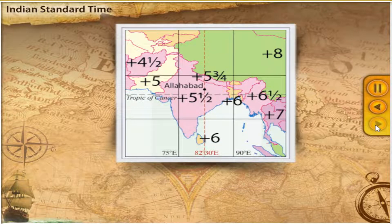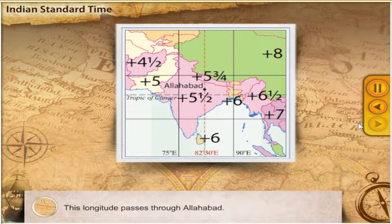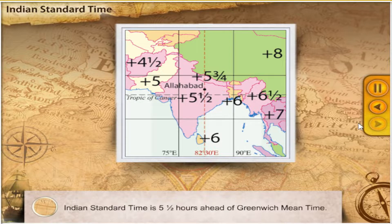In India, the local time at 82.5 degrees east longitude is taken as the Standard Time. This longitude passes through Allahabad. Indian Standard Time is 5.5 hours ahead of Greenwich Mean Time.